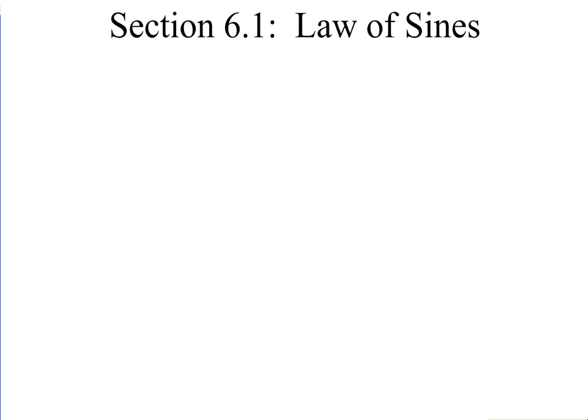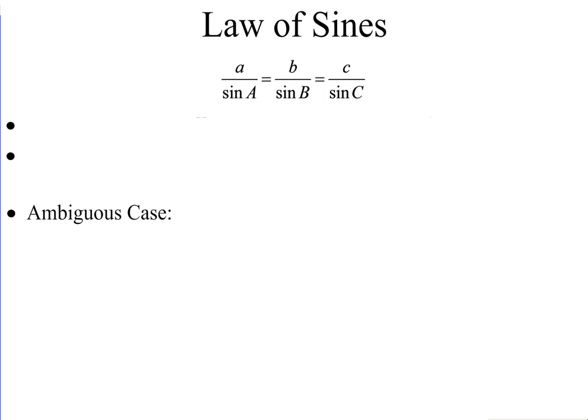Section 6.1, Law of Sines. This is the formula we are going to use when solving triangles. Up until now, all the triangles we have solved used right triangle trigonometry, which works for right triangles but does not work for others. Law of Sines and Law of Cosines allows us to solve any type of triangle.